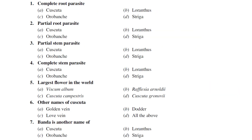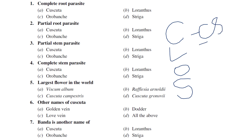There are four important phanerogamic plant parasites: Cuscuta, Loranthus, Orobanche (Warabanki), and Striga. Cuscuta is called a complete stem parasite, Loranthus is a partial stem parasite, Orobanche (Warabanki) is a complete root parasite, and Striga is a partial root parasite. These four majorly revolve around phanerogamic plant parasites in the ebook.